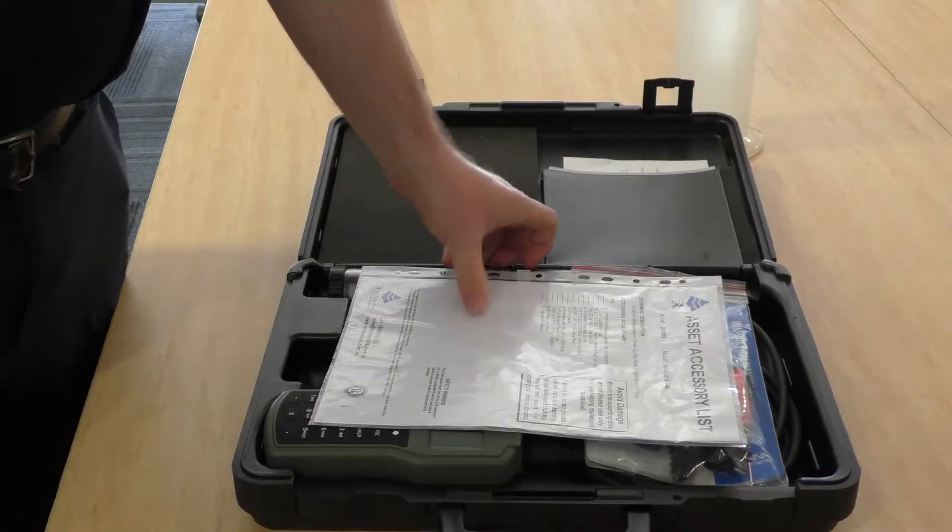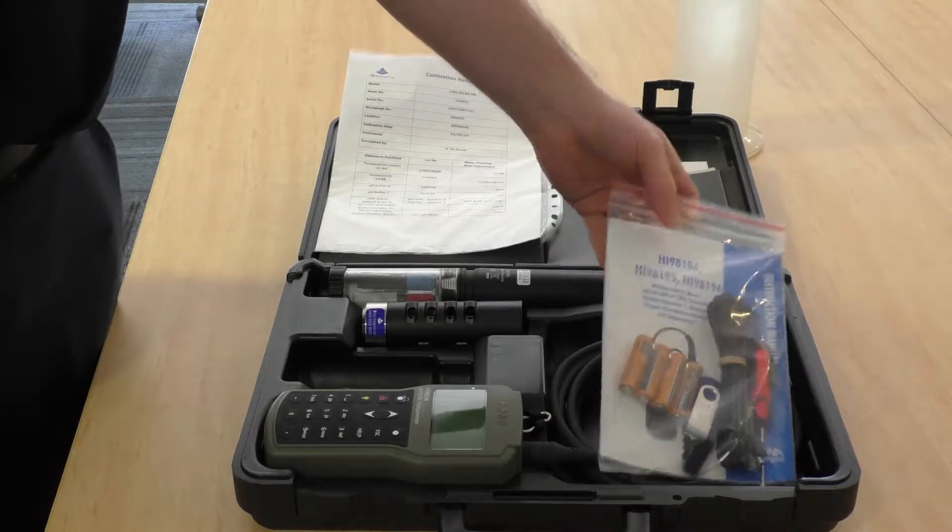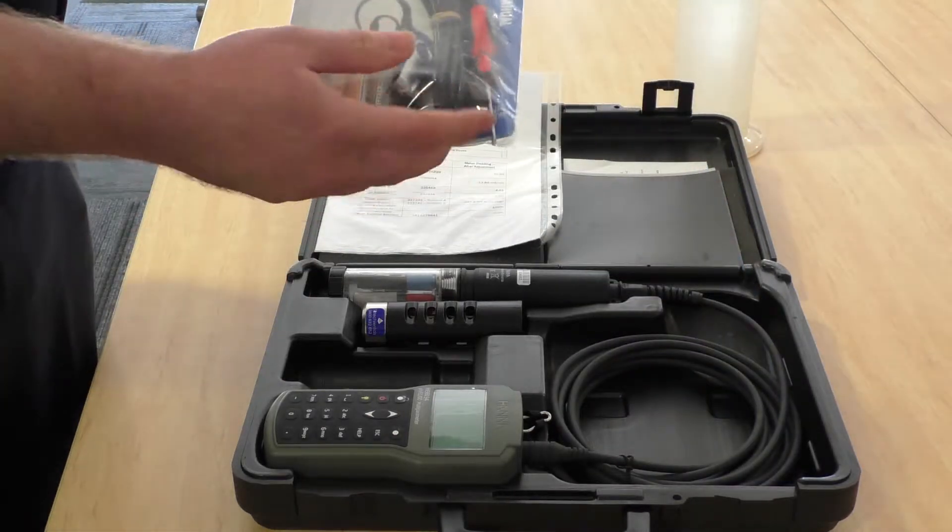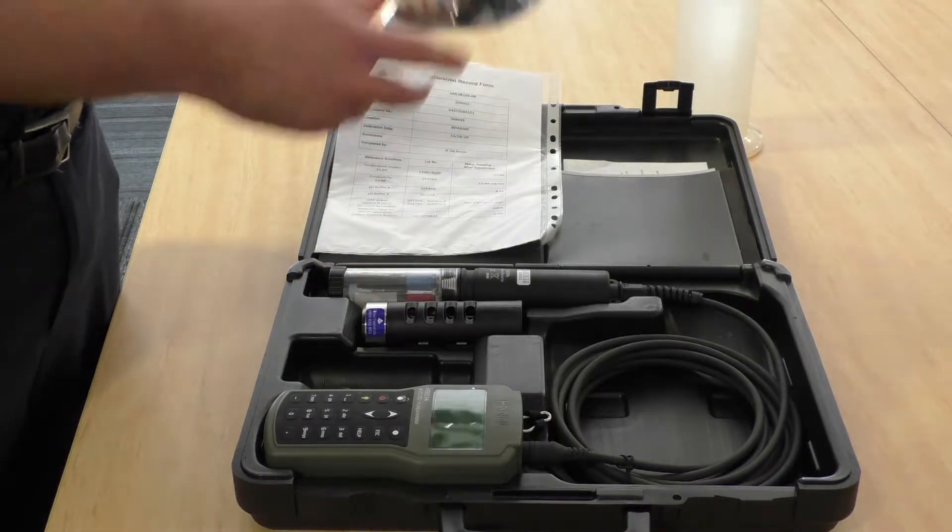Opening up the meter, it comes with the accessory list, calibration record, spare batteries, screwdriver to help you change them, the software's on a USB stick, the manual and a USB cable.